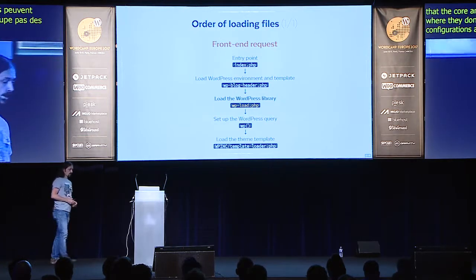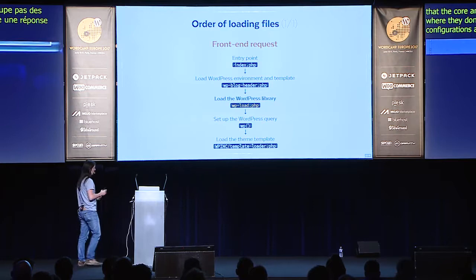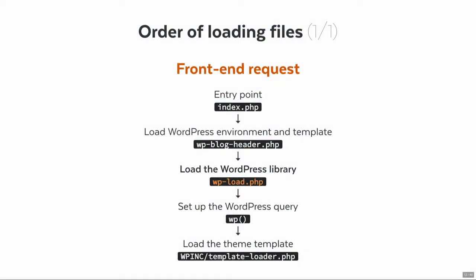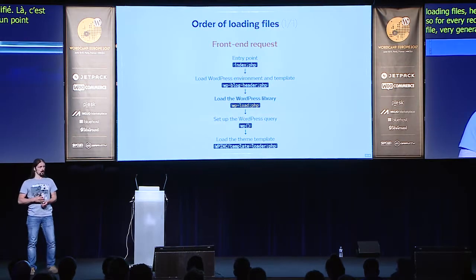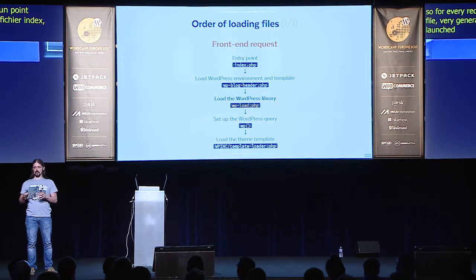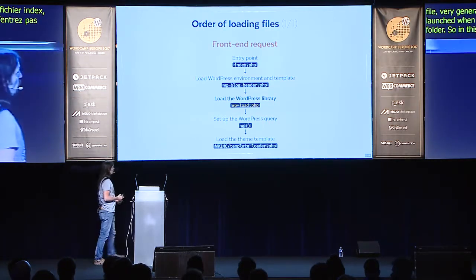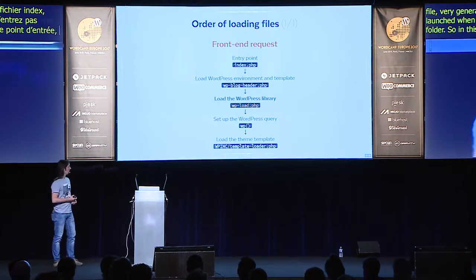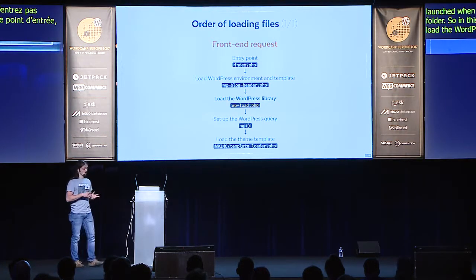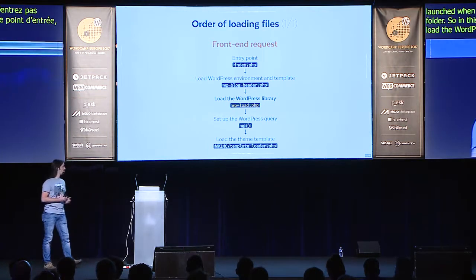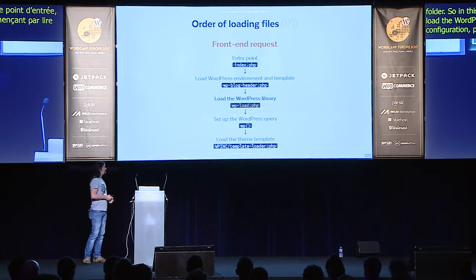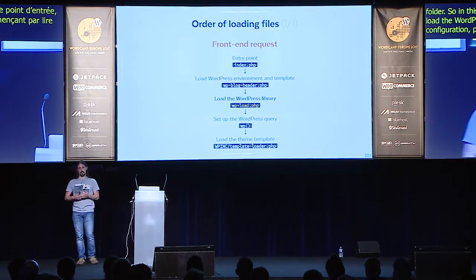The order of loading files — here is a very simplified version of it, and this is for front-end requests. For every request you're doing, you have an entry point: this is the index.php file. Generally, the index file on a web server is the first file that is launched when you don't enter the address of a particular file but just of a folder. So in this case we have the entry point, index.php, which starts to load the WordPress environment, starting by reading all the configuration and preparing the settings. Then the WordPress library is loaded, which enables the WP function to be called.